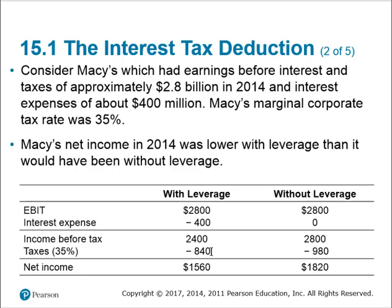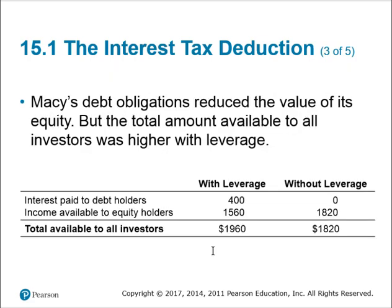It's $140 million less in taxes — we still had to pay the $400 million in interest. But the idea here is that the government is kind of subsidizing our borrowing. We have to actually pay $400 million, but the government is effectively giving us back $140 million.